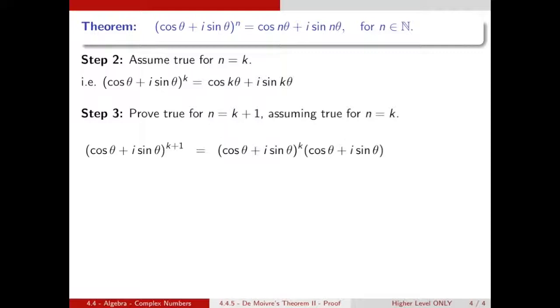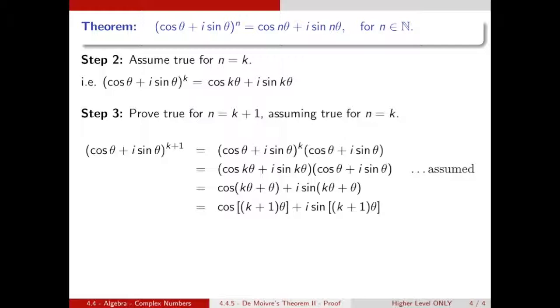Using our assumption step, we can replace the left hand term there with what we assumed, which becomes then cos k theta plus i sine k theta, still multiplied by cos theta plus i sine theta. Now if you multiply out those brackets and tidy it up, you get cos k theta plus theta plus i sine k theta plus theta. And that's also using some of your trigonometric identities. And then that tidies up further to give us cos of k plus one times theta plus i sine k plus one times theta, which is what we wanted to show.